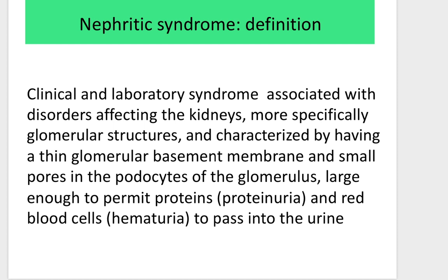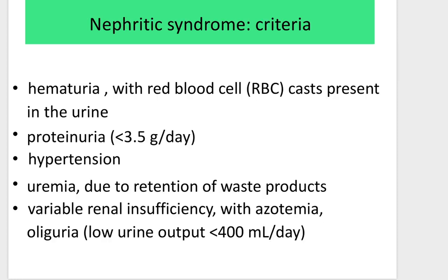The next syndrome is nephritic syndrome. It differs from the previous one by just one letter, but the difference is principal. Definition: it is a clinical and laboratory syndrome associated with disorders affecting the kidneys, more specifically glomerular structures, characterized by a thin glomerular basement membrane and small pores in the podocytes of the glomerulus, large enough to permit proteins (proteinuria) and red blood cells (hematuria) to pass into the urine. Criteria include hematuria with red blood cell casts in the urine, and proteinuria less than 3.5 grams per day — which differentiates it from nephrotic syndrome where proteinuria exceeds 3.5 g/day.